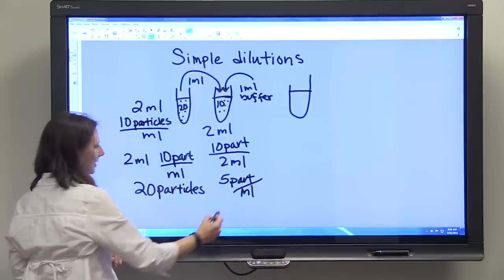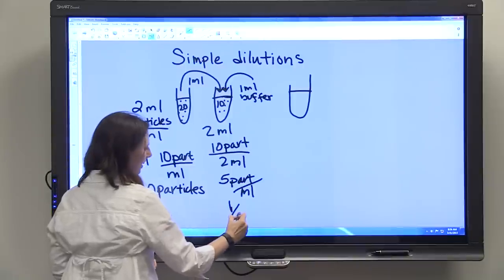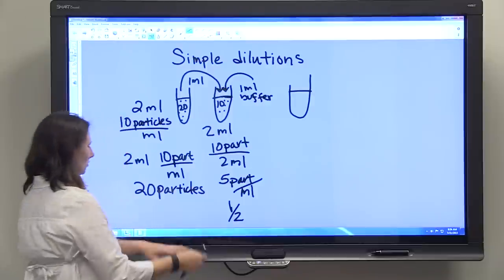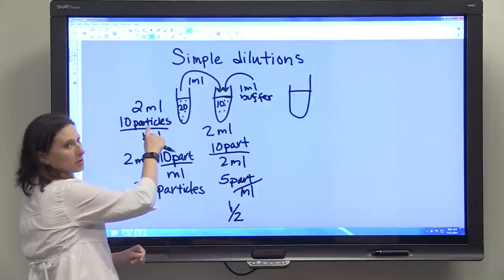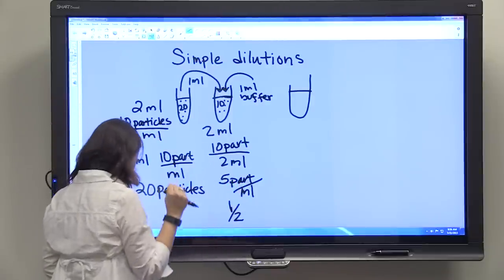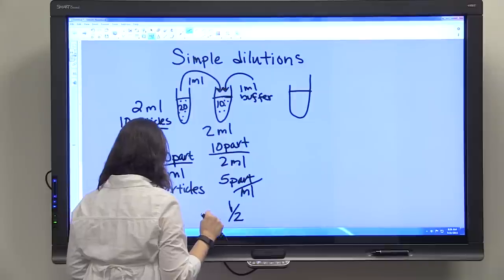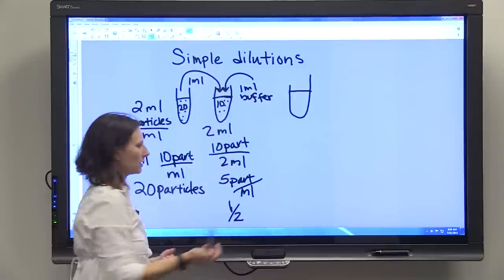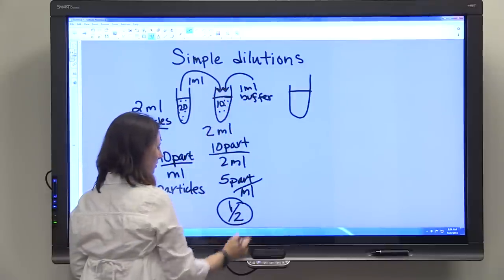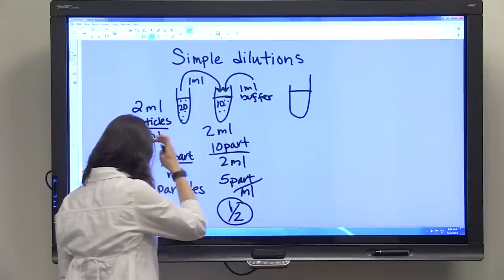And so that's a 1 half dilution as compared to the 10 particles per ml, 5 particles per ml. And it's 1 ml out of 2 ml's is another way that you can know that it's a 1 out of 2 dilution.